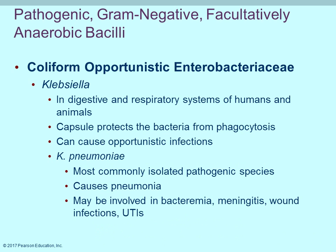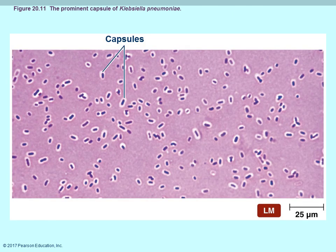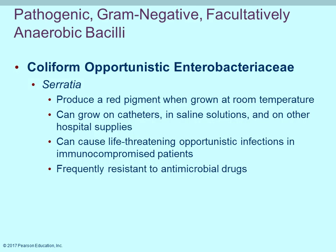Klebsiella is found in the digestive and respiratory systems of humans and has a capsule that helps protect it from phagocytosis. It can be opportunistic — if it goes into the lungs it can cause pneumonia; in the urinary tract it can cause urinary tract infections; it can also cause a form of meningitis. The image shows Klebsiella pneumoniae with its characteristic white capsule surrounding the cell.